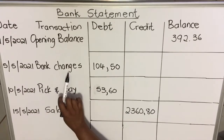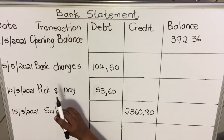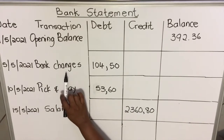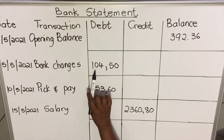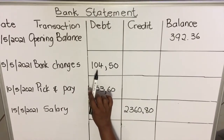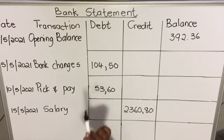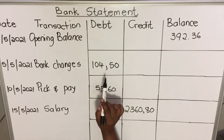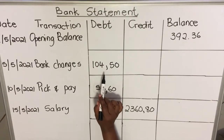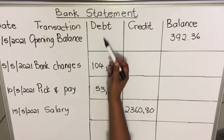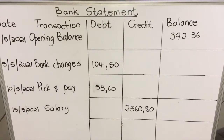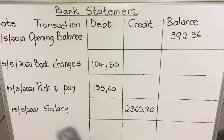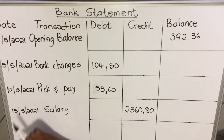On the fifth there was a transaction: bank charges. When you have an account you pay for that account, so the bank charges you. The amount here is R104.50, meaning the bank has charged you this amount and it will be deducted from your account — that's why it's debited.